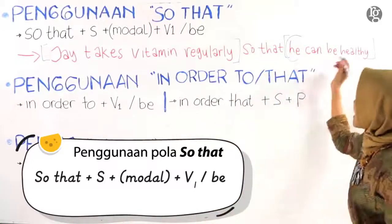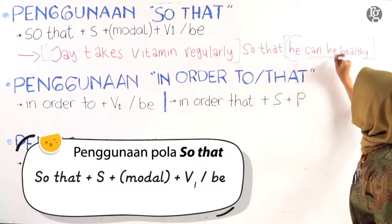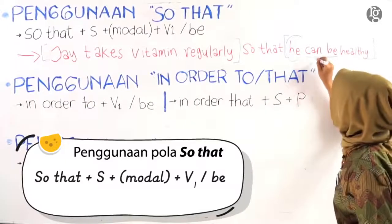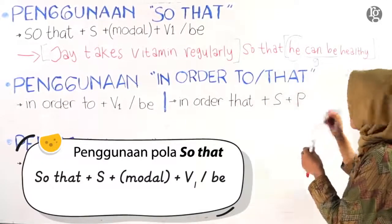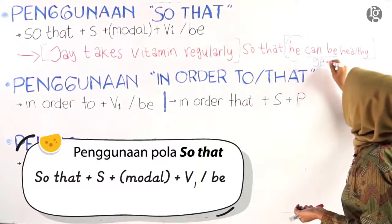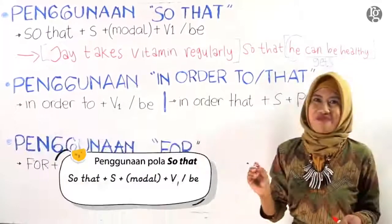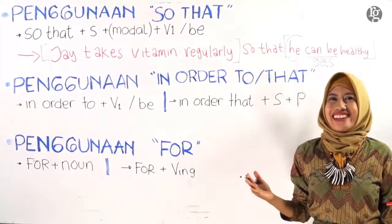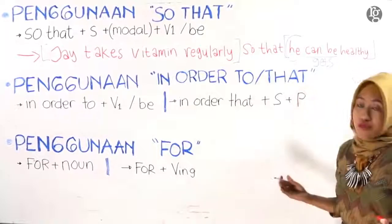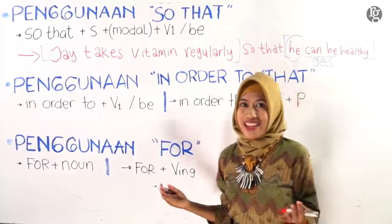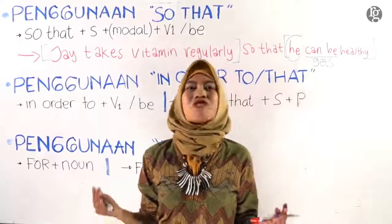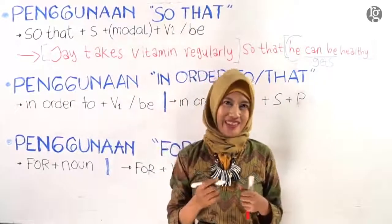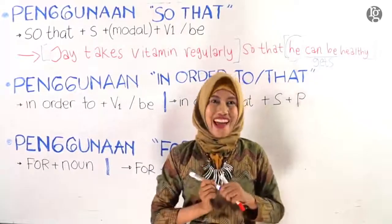Di sini misalnya, kakak ganti 'can' ini, 'can be', kakak ganti menjadi 'gets'. Jadi bisa Jai takes vitamin regularly so that he can be healthy or so that he gets healthy.